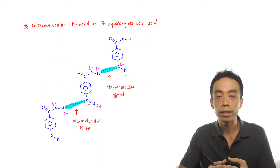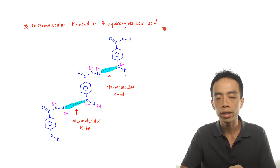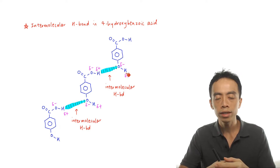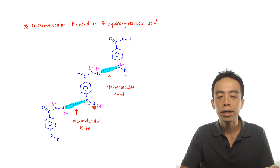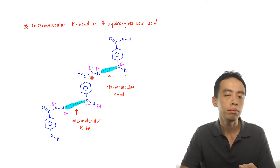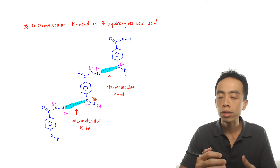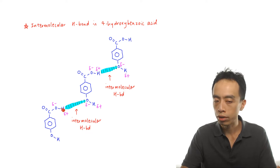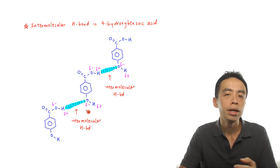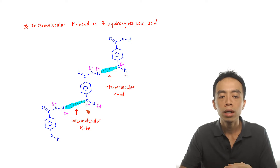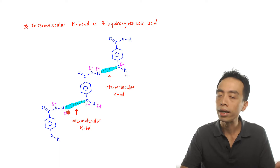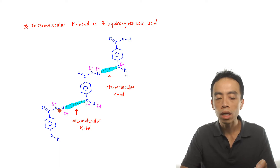Let us look at the intermolecular hydrogen bond in 4-hydroxybenzoic acid, where the acid group and the alcohol group are pointing directly opposite each other. Because the two groups are pointing opposite each other, they are not capable of interacting within the same molecule. So this OH group will be able to form intermolecular hydrogen bonds with a neighboring molecule, as shown here. Remember, a hydrogen bond is formed between an electronegative element — oxygen in this case — and a hydrogen attached to another electronegative element, also oxygen here.